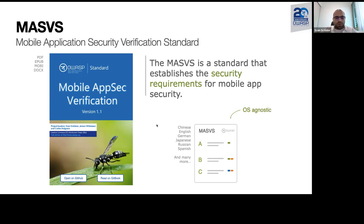When we started the project in 2016, our goal was to establish an industry standard for mobile security. This mission was achieved because the MASVS is referenced in various mobile app payment standards in Europe and other countries. The document lives in GitHub, written in markdown, and you can read it in Gitbook — every change in GitHub is also reflected in Gitbook.